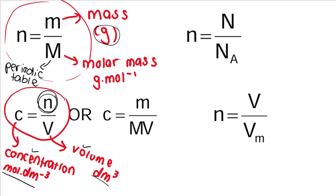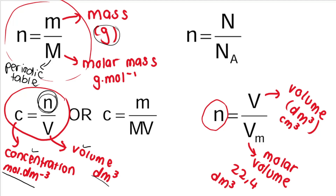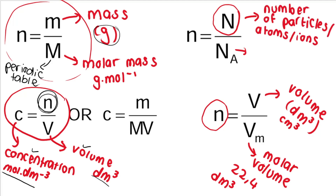If you are dealing with gases at STP, you are given the volume of that gas — measured in cubic decimeters or cubic centimeters, which you convert — and you use n = V/Vm, where Vm is the molar volume, equal to 22.4 cubic decimeters at STP. Or lastly, if you are given the number of particles, atoms, or molecules (big N), you use n = N/NA, where NA is Avogadro's number, 6.023 times 10 to the power of 23. Little n is number of moles.